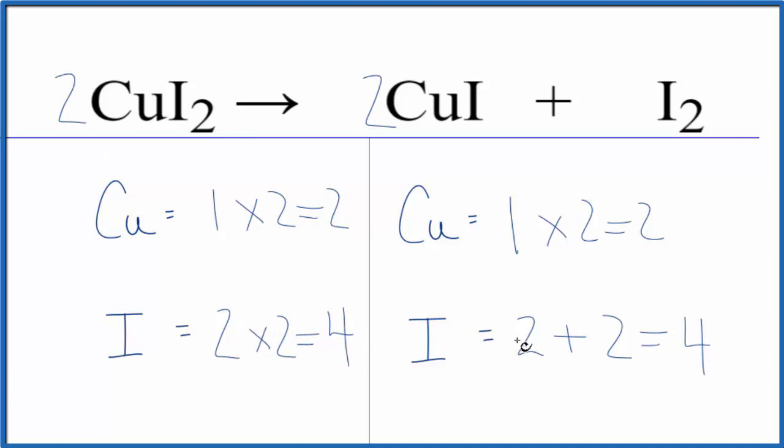This equation's balanced. So the key here was trying to get this number here, which was originally three, to an even number. Once you do that, things kind of just work out quite often.